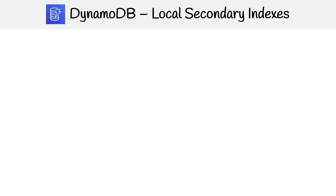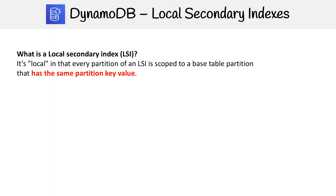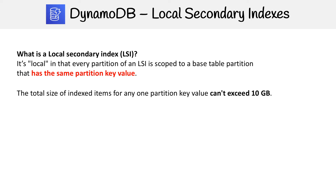Let's first take a look at local secondary indexes. It's considered local because every partition of an LSI is scoped to a base table partition that has the same partition key value. The base table is the initial table that you're creating the index from. The total size of index items for any one partition key value can't exceed 10 gigabytes.